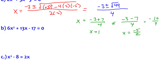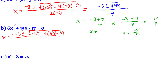Let's do that one more time with the next problem. Same concept: we set up the quadratic formula. Negative 13 plus or minus the square root of 13 squared minus 4 times 6 times negative 17, all over 2a. Since 2 times 6 is 12, I'll just write 12 to save writing. Let's simplify under the radical: 13 squared is 169, and negative 4 times 6 times 17 gives 408. Because both factors are negative, we get plus 408.